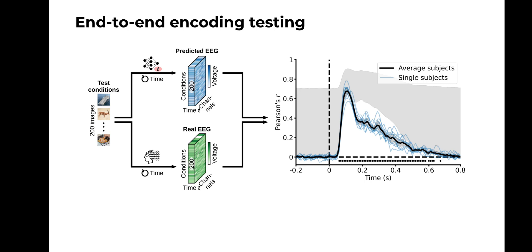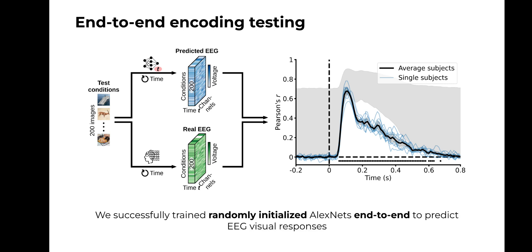This is the temporal evolution of the correlation. The correlation starts being significant at 60 milliseconds after image onset, with a peak at around 100 milliseconds, and remains significant until 600 milliseconds. This shows that the end-to-end encoding models well predict the EEG responses to images, at times even reaching the noise ceiling level and thus accounting for most of the explainable EEG variance. So going back to our original question: yes, our EEG dataset allows successful training of randomly initialized DNNs in an end-to-end fashion.